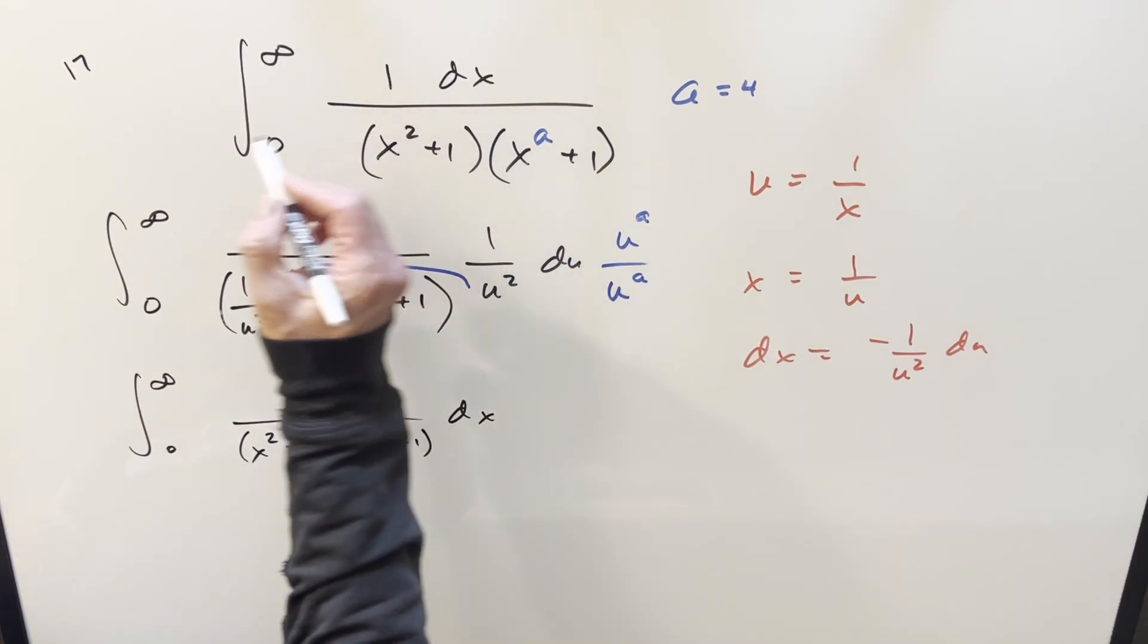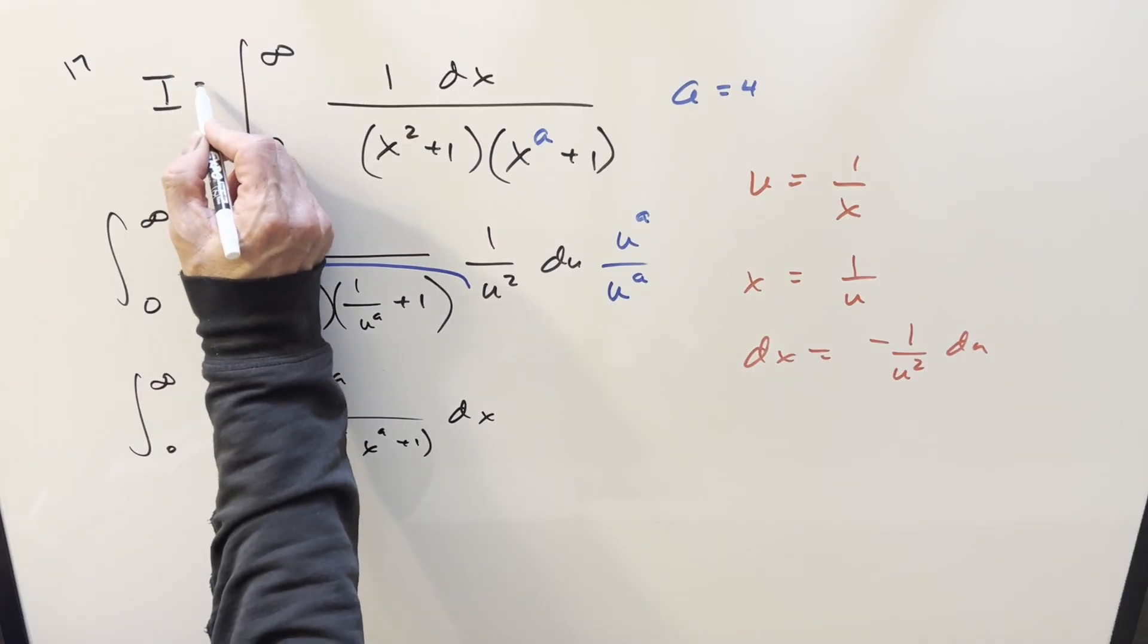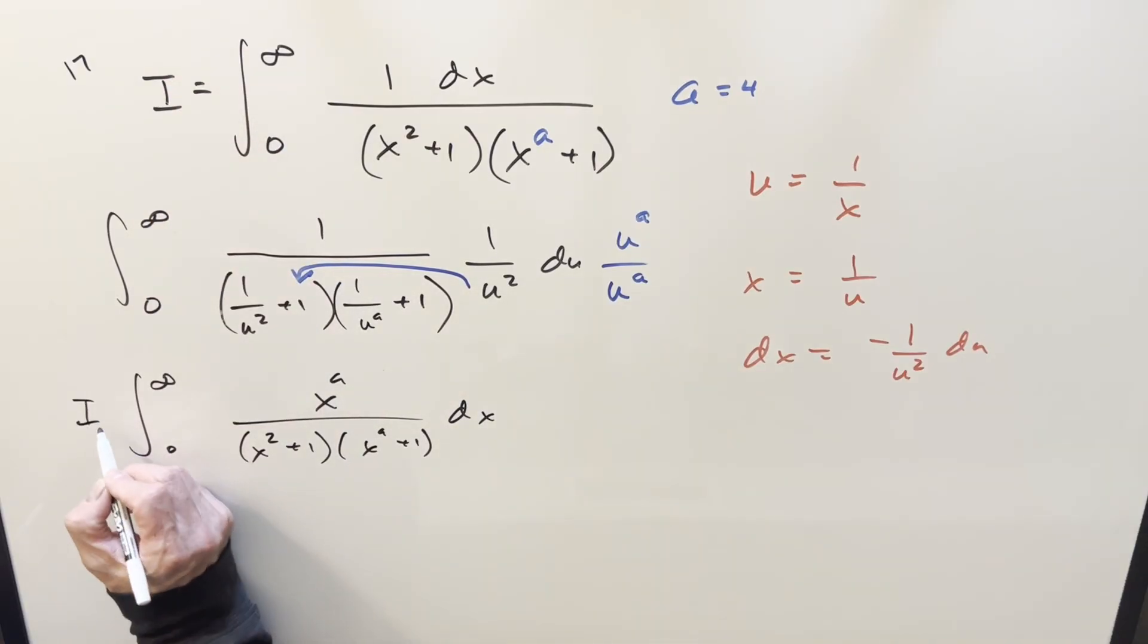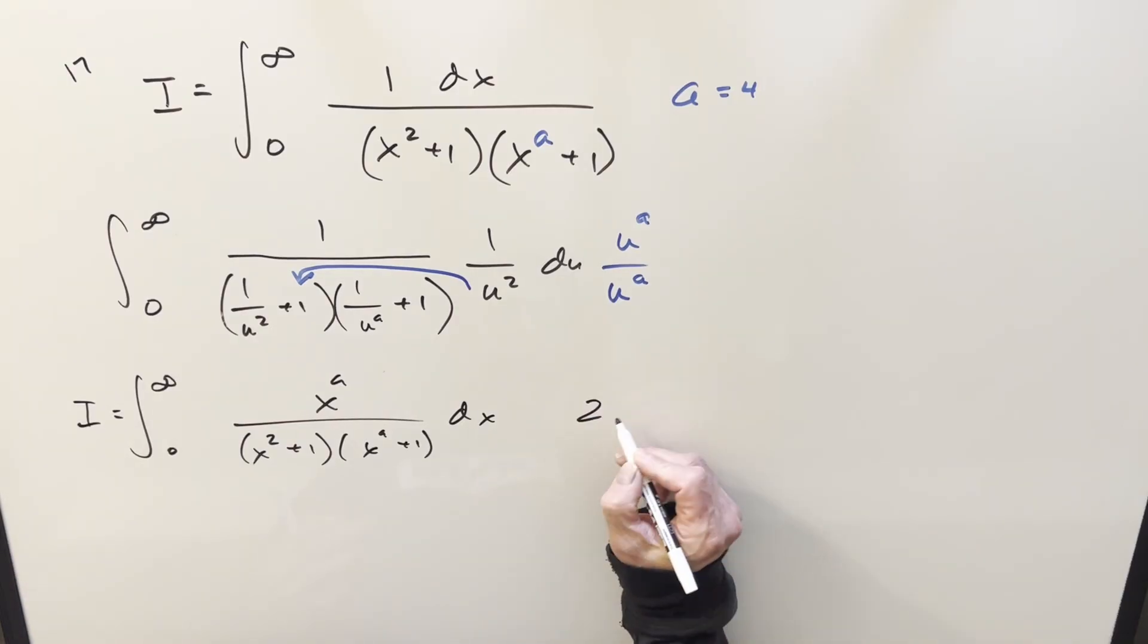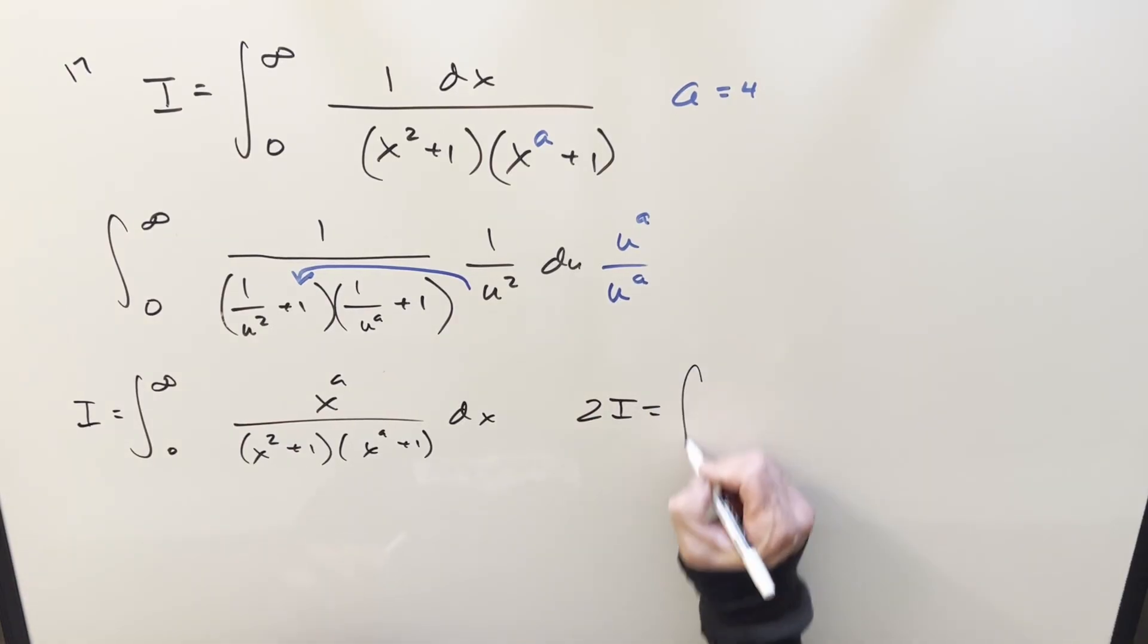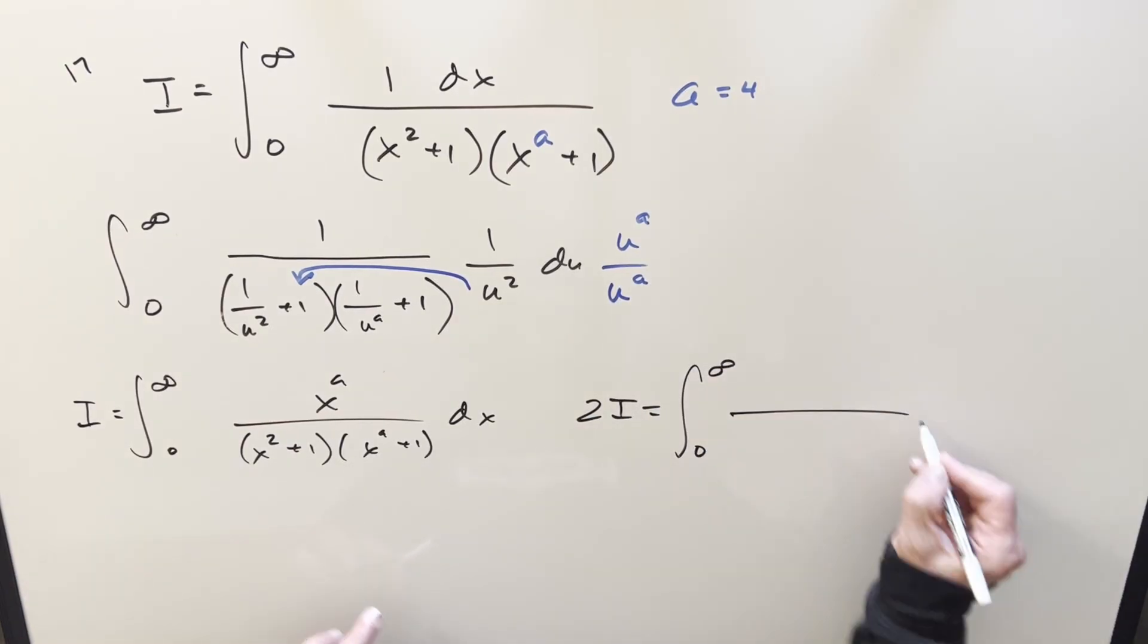Think about it like a 1 in the numerator here, just kind of put a label on it. We'll call that one I and we'll call this one I. So adding these two together, we'll have 2I. We'll write it over in this area. Again, from zero to infinity, same denominator.